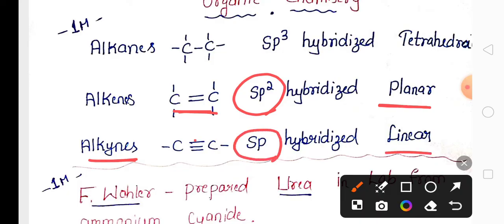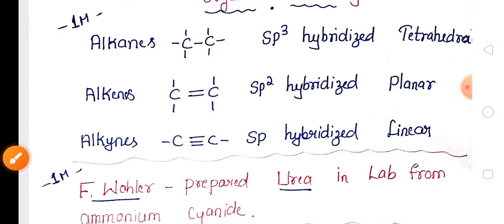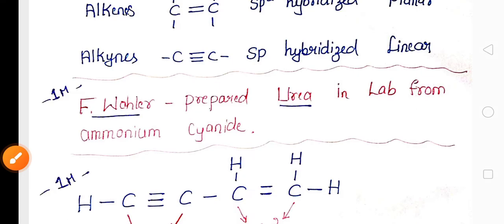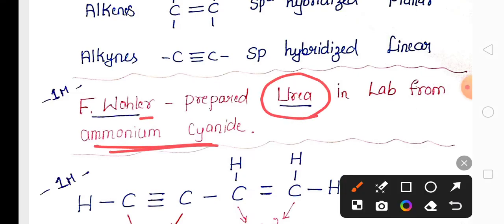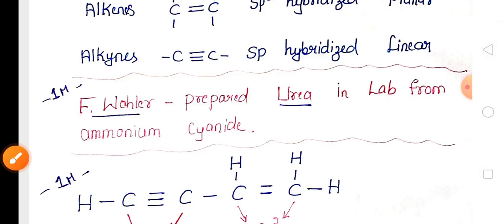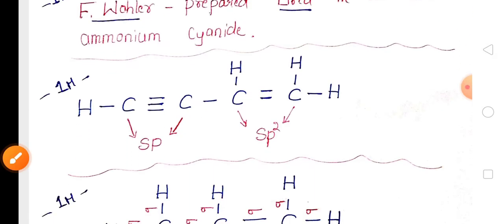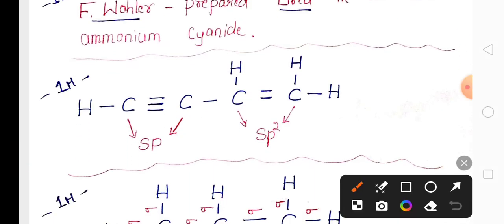The first organic compound prepared in the lab is urea, synthesized from ammonium cyanate. The scientist's name is Friedrich Wöhler. This is important for one mark.